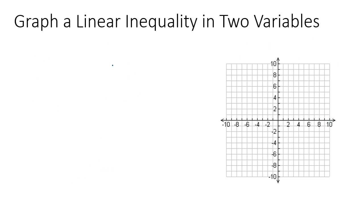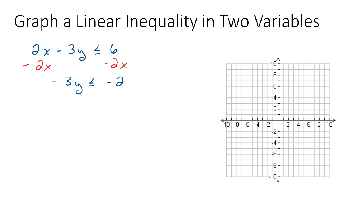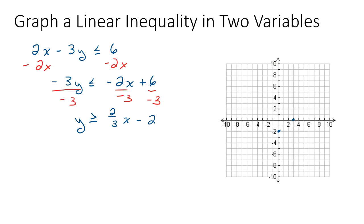Let's look at a couple more interesting examples. If you have a linear inequality like 2x minus 3y is less than or equal to 6, you might want to put it in slope-intercept form before graphing. Move the 2x over: negative 3y is less than or equal to negative 2x plus 6. Then divide everything by negative 3 — and remember, you need to flip the inequality sign when multiplying or dividing by a negative. My suggestion is to put it in slope-intercept form first, then graph your line. We get a y-intercept of negative 2 and a slope of 2/3. Since there's an equal sign, it's a solid line.